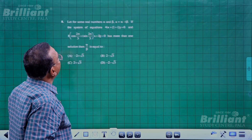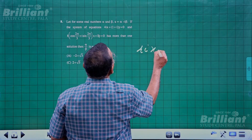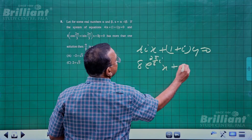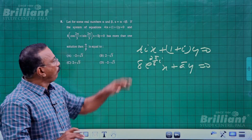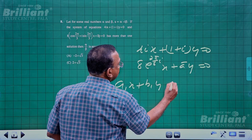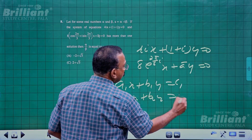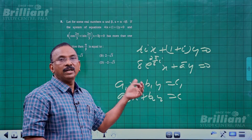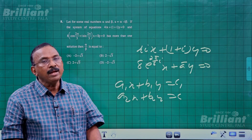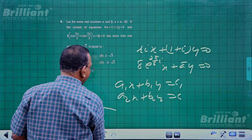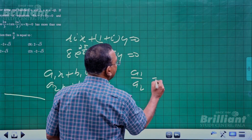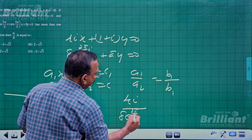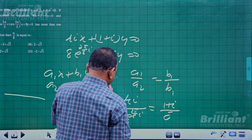Question 8 involves a system with two equations: 4ix + (1+i)y = 0 and 8e^(2πi/3)x + āy = 0 where a = α - iβ. For the system to have more than one solution (coincident lines), we need 4i/[8e^(2πi/3)] = (1+i)/ā. Cross-multiplying: iā = (1+i)·2·e^(2πi/3).